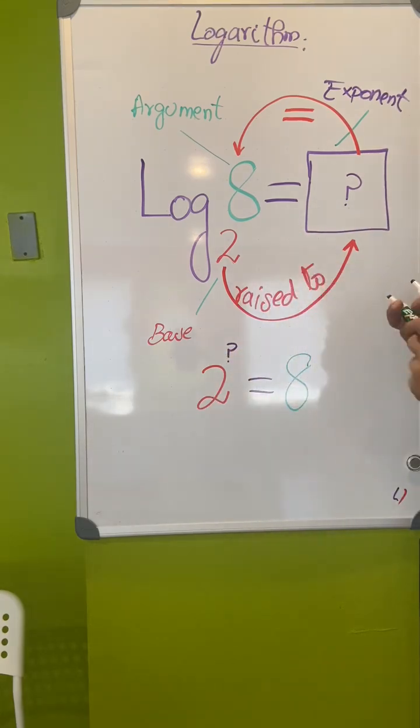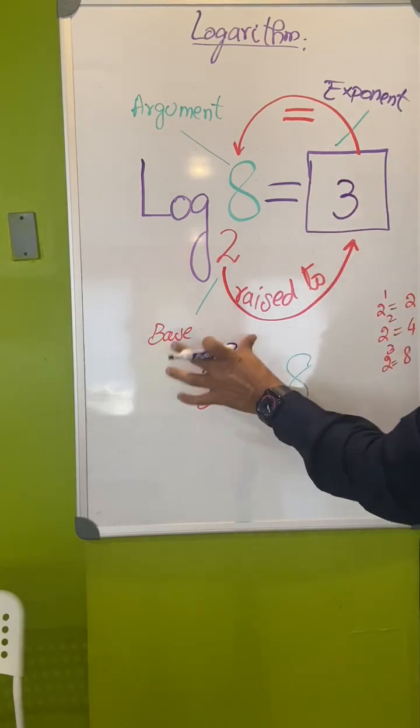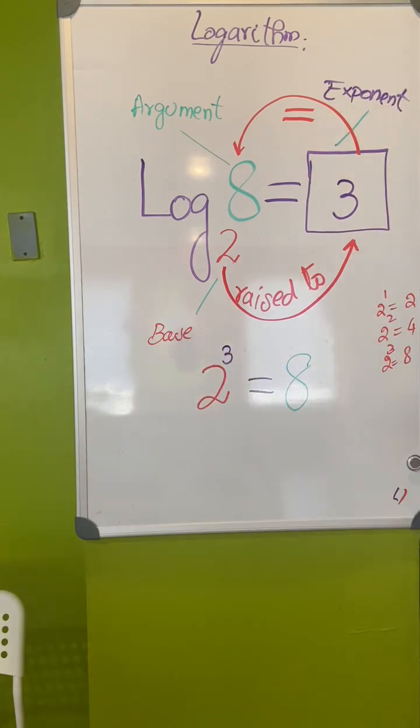2 raised to what is 8? 2 raised to 3 equal to 8. So it's 3, 2 raised to 3, right?